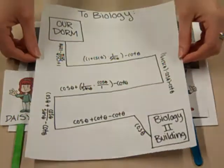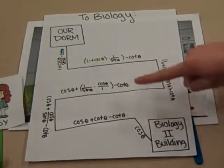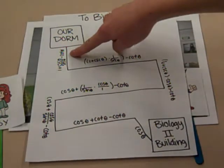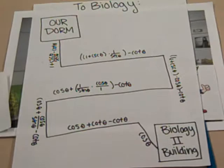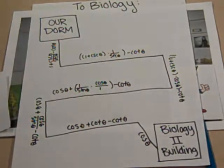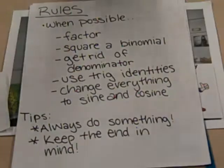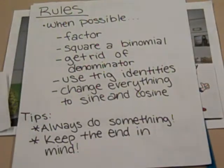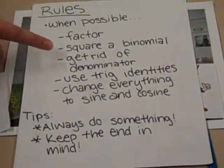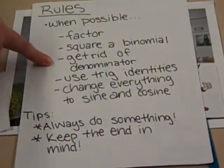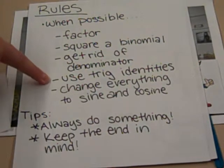It's Biology 2, and the address is cosine theta. So our address is (1 + csc θ) / (sec θ - cot θ). The general rules for finding the address you are looking for is: go down a street that has factored, squared a binomial, gotten rid of the denominator, or used the fundamental trig identities to change streets.